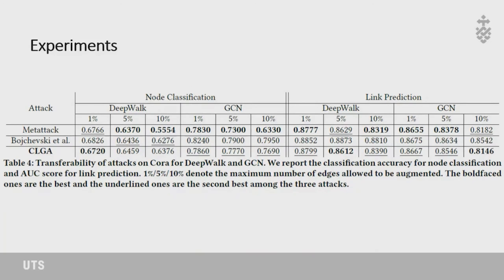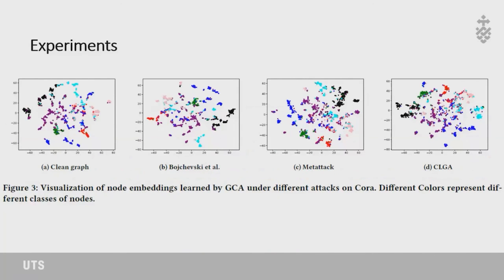For more details please refer to our paper. We also have an experiment visualizing learned embeddings using the clean graph, the poisoned graph from the unsupervised baseline, and CLGA. Meta-Attack and CLGA do not converge as well, especially in the center, where the density of embeddings is much larger than in the clean graph. This suggests many node embeddings are pushed to a tricky position with similar distances to most clusters, making them hard to classify — effectively degrading the quality of the learned embeddings. That's all for the introduction of our work. Thanks for listening.